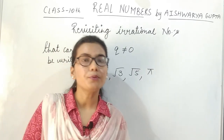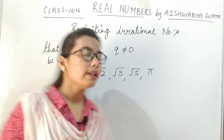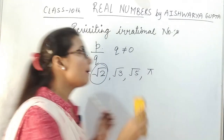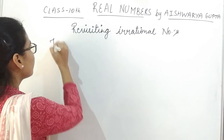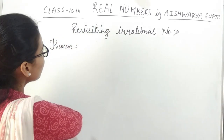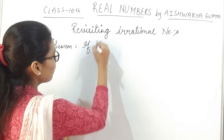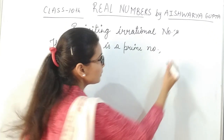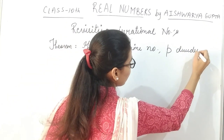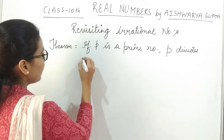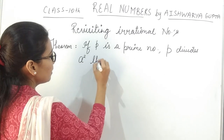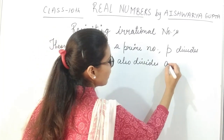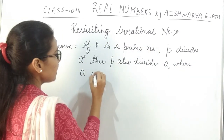Now, if we talk about how to prove that a number is irrational — for example, if we have to prove that root 2 is irrational — then first of all, there is a theorem we need to know: if P is a prime number and P divides A squared, then P also divides A, where A is any positive integer.